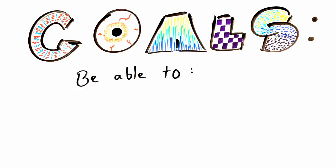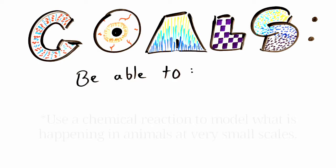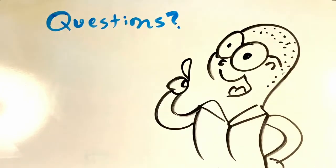Let's review our goal to make sure that you met it. After watching this video, you should be able to use a chemical reaction to model what is happening in animals at very small scales. If you can't do that, go back and watch the parts of the video that you don't understand. But remember, science is not just about answers. It is also about questions. So at this point, go ahead and pause the video and come up with some questions that you still might have about cellular respiration or our mealworms.